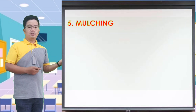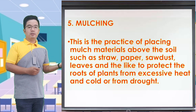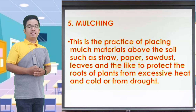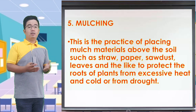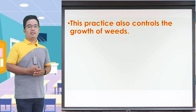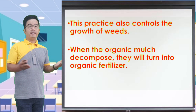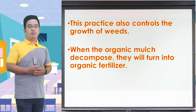Mulching is the practice of placing mulch materials above the soil, such as straw, paper, leaves, and the like, to protect the roots of plants from excessive heat, cold, or drought. This practice also controls the growth of weeds. When the organic mulch decomposes, it will turn into organic fertilizer.